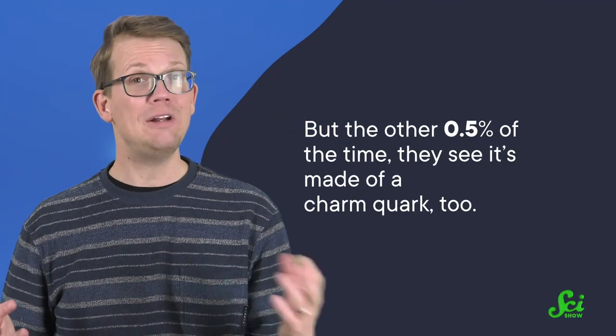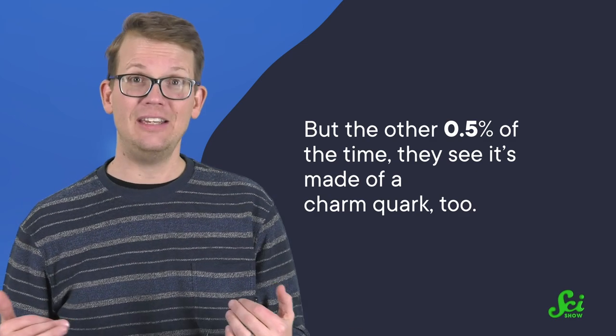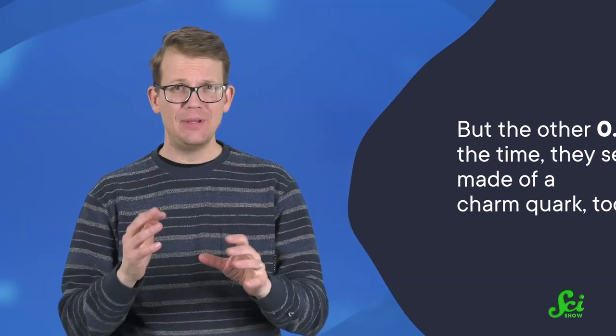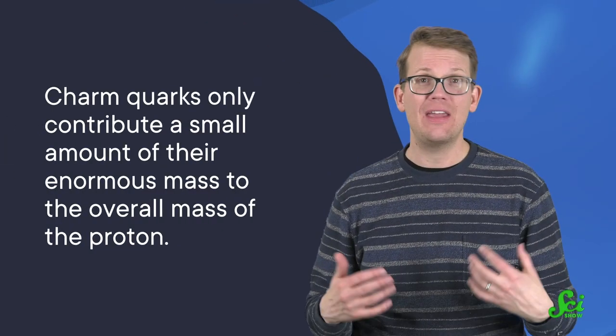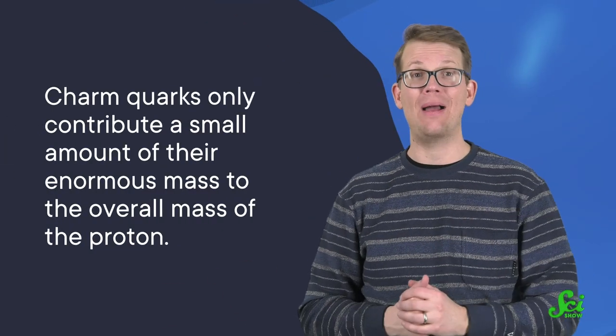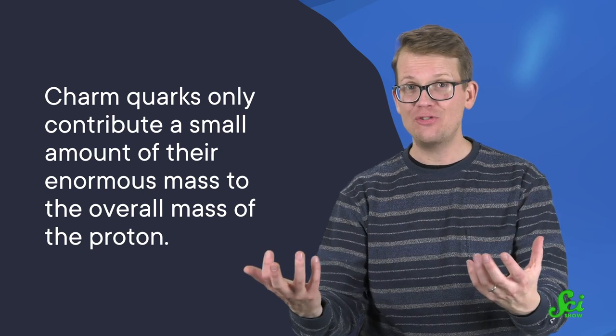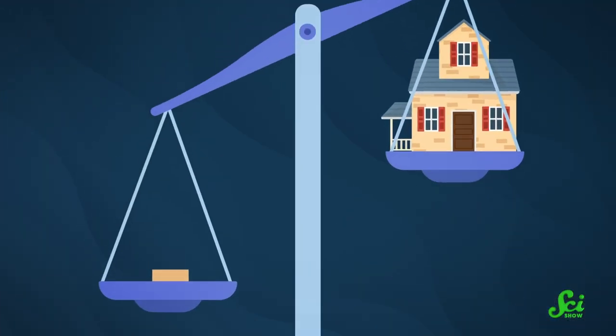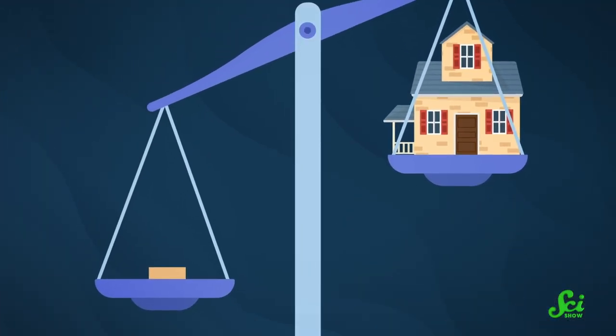But the other 0.5% of the time, they see it's made of a charm quark, too. Because the charm quarks are there so infrequently, and they are short-lived, they only contribute a small amount of their enormous mass to the overall mass of the proton in the equations that describe these things. That is how the brick can weigh more than the house.